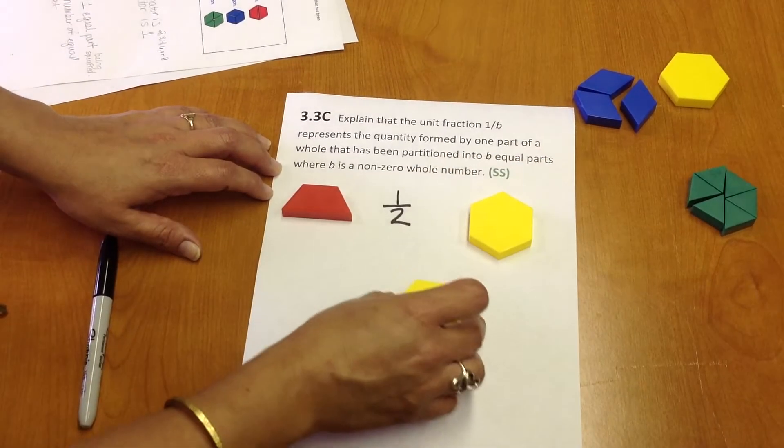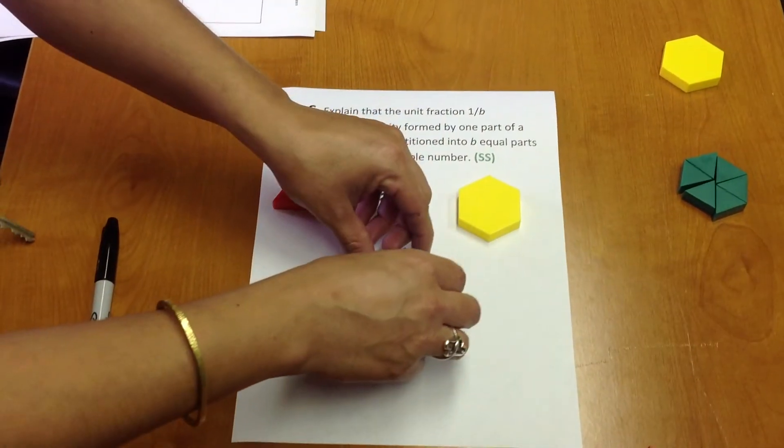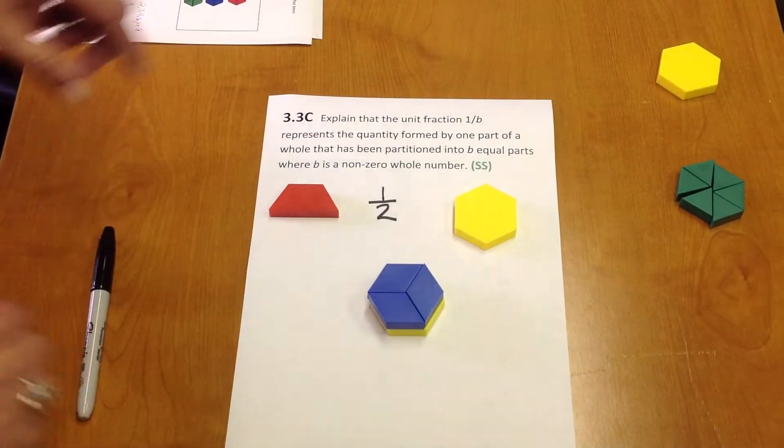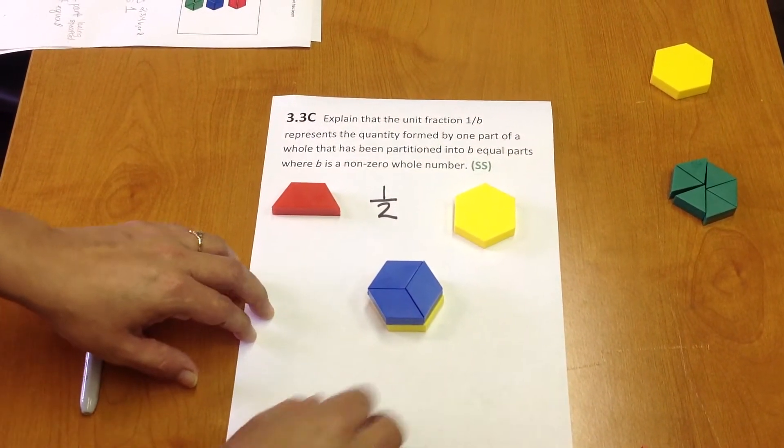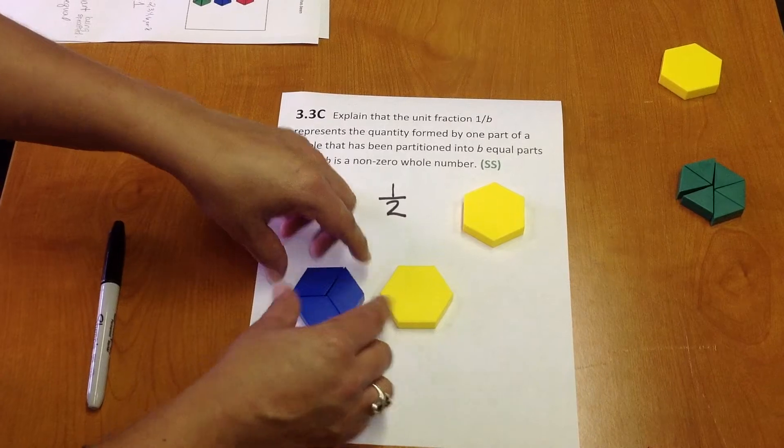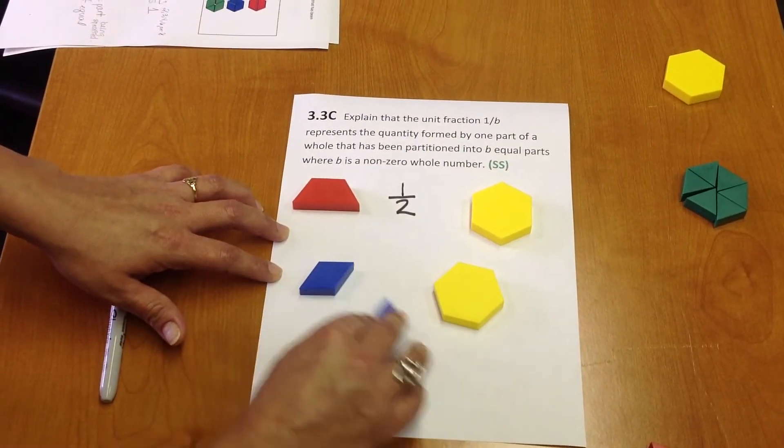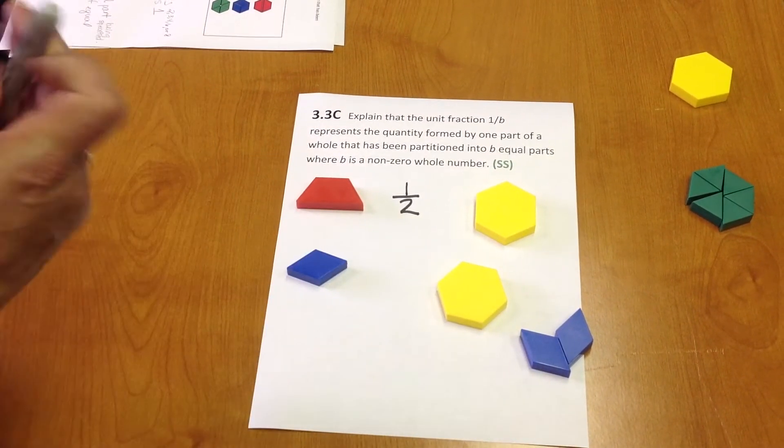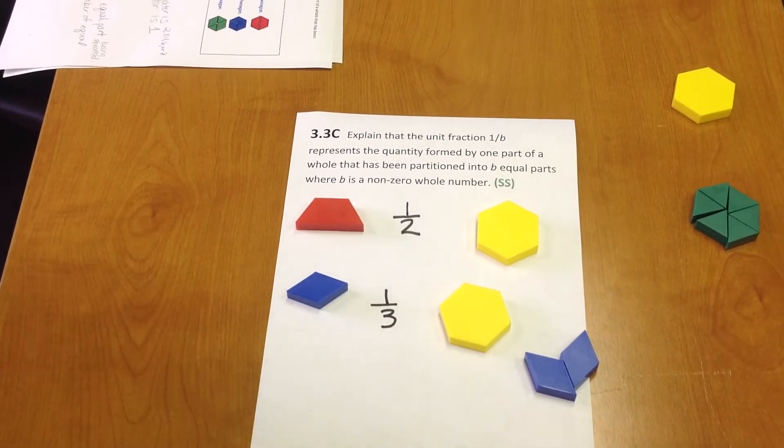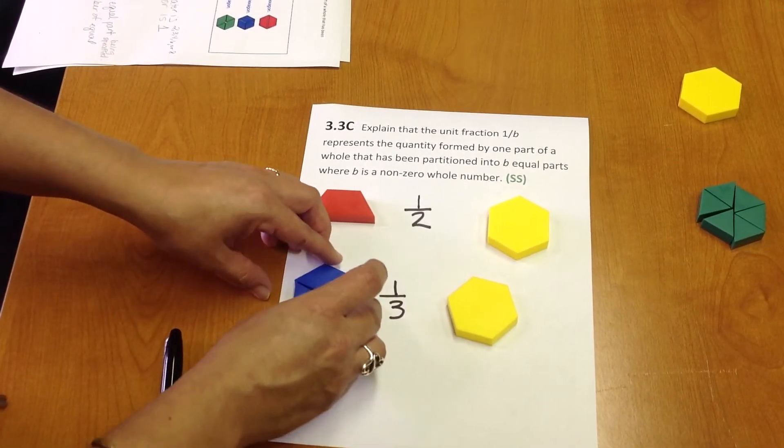Using, again, a hexagon, let's look at a rhombus. How many rhombuses? Three will create a hexagon as well. So the whole of one hexagon can be represented by three rhombuses. Therefore, each rhombus is one-third of a hexagon with three representing the number of equal parts in the whole.